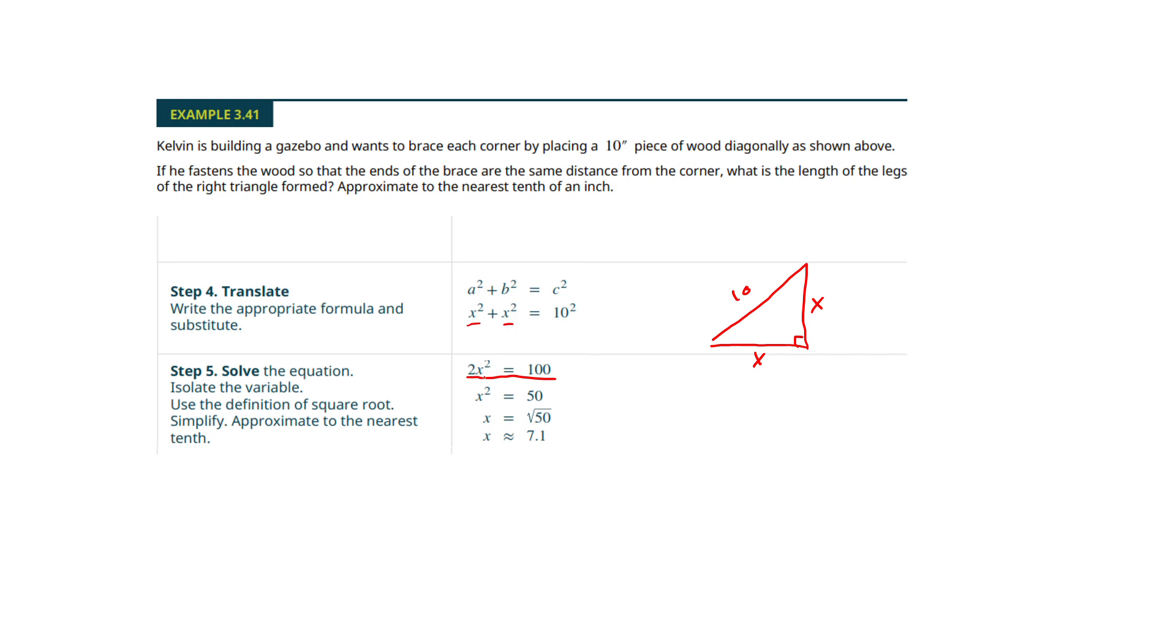Now, to get x squared alone, we're going to follow the same principles. I want to isolate that difficult part. If this was 2x equals 100, I would just divide both sides by 2. Well, I'm going to do the same thing even though it's x squared. So divide both sides by 2, got me this. And now we know what to do here. We square root both sides.